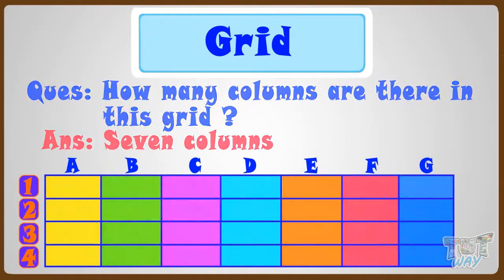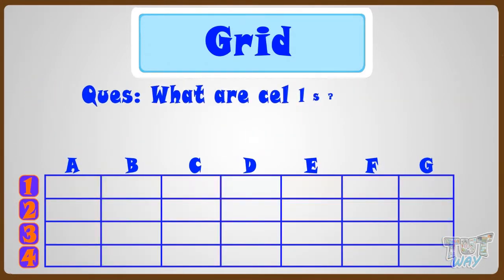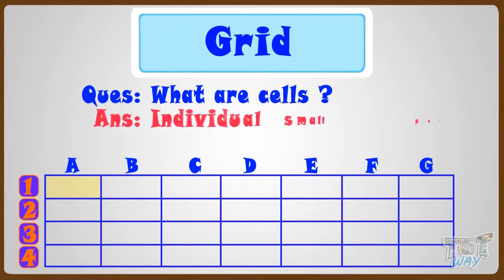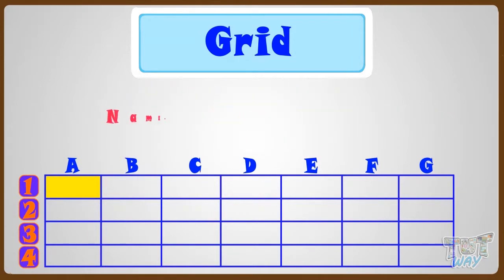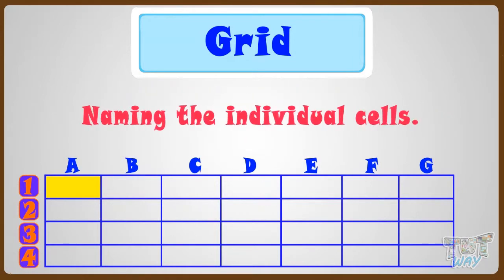Now let's see what are cells. These individual small partitions are called cells. Now let's see how we can name these individual cells. Let's name the first cell. Its row name is 1, and its column name is A. So, it's 1A.